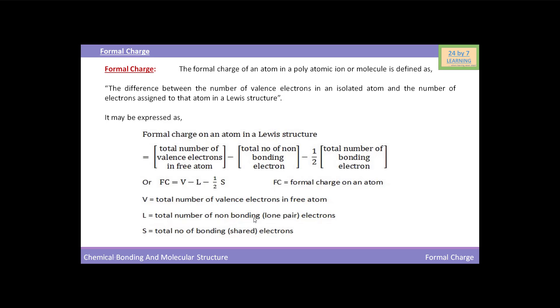is the total number of non-bonding, that means lone pair electrons, and S is the total number of bonding or shared electrons.